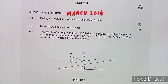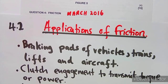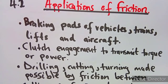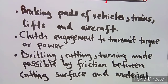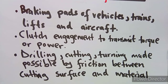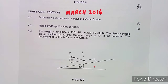Then 4.2 — name two applications of friction. There are so many applications but we just need two. Applications of friction include braking pads of vehicles, trains, lifts, aircraft, clutch engagement to transmit torque and power, and drilling, cutting, and turning made possible by friction between cutting surfaces and material. Just any two of your choice.